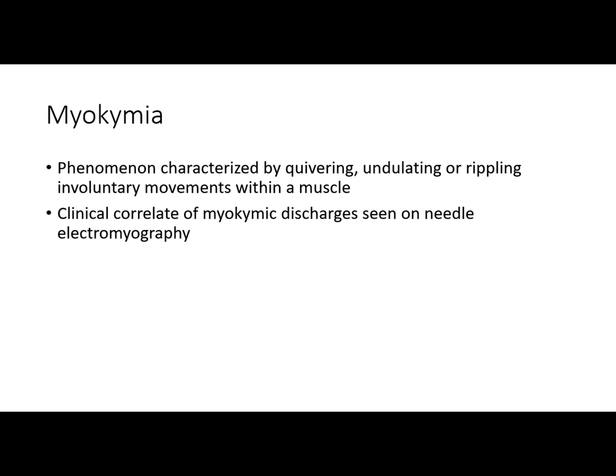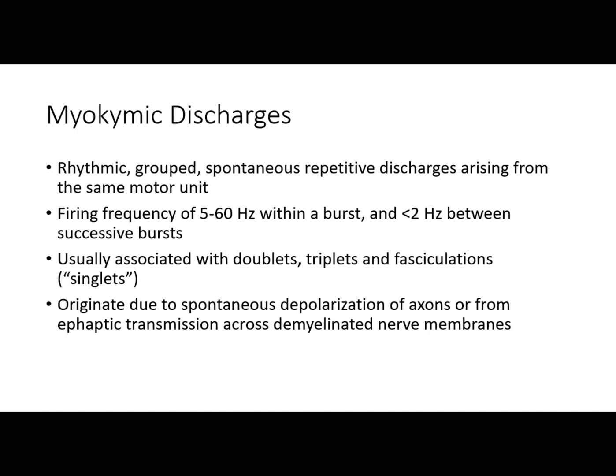The electromyographic correlate of myokymia is what are known as myokymic discharges. These are grouped, rhythmic, spontaneous discharges that repeatedly arise from the same motor unit. They have a fairly fast firing frequency of between 5 and 60 hertz within a burst, and a little slower at less than 2 hertz between successive bursts of the same motor unit.